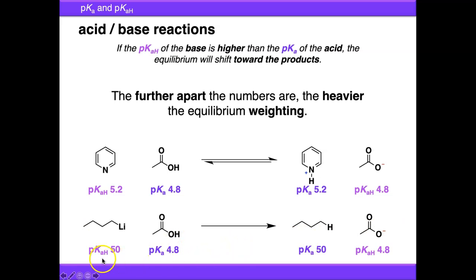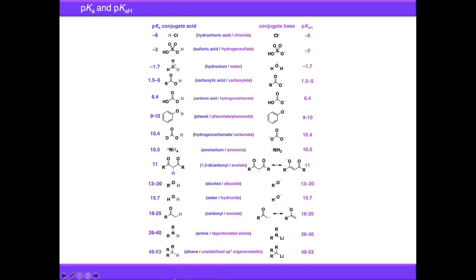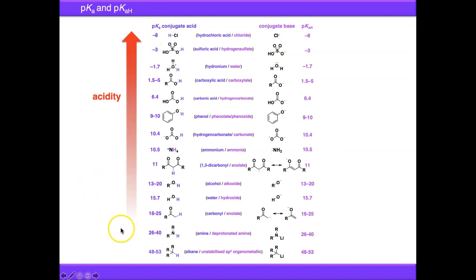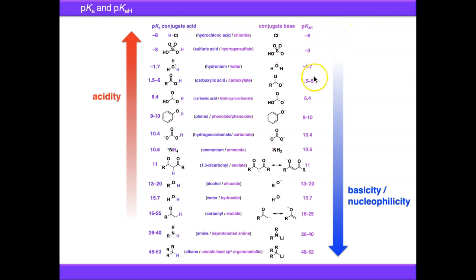This is an abridged version of the table in your workbook, organised with conjugate acids and their pKa values on the left, and the corresponding conjugate bases with their pKaH values on the right. pKa is a measure of acidity — stronger acids like hydrochloric acid and sulfuric acid appear higher up. pKaH is a measure of basicity or nucleophilicity — stronger bases and nucleophiles appear further down. To substantially deprotonate something, you simply need to pick a base with a pKaH value higher than the pKa of whatever you're trying to deprotonate.